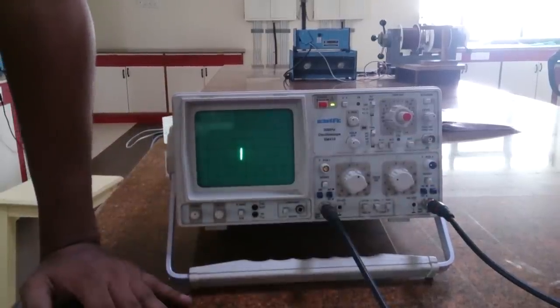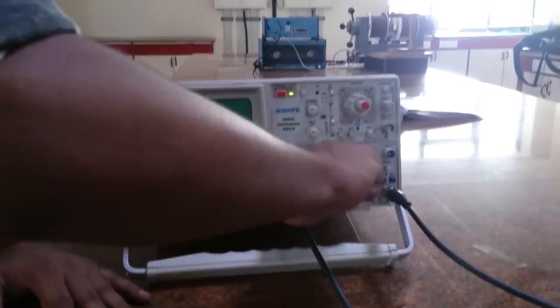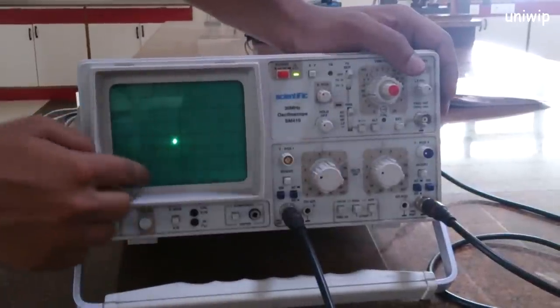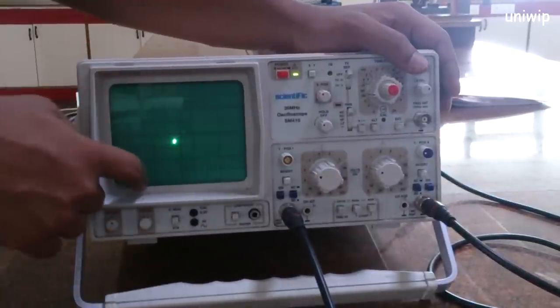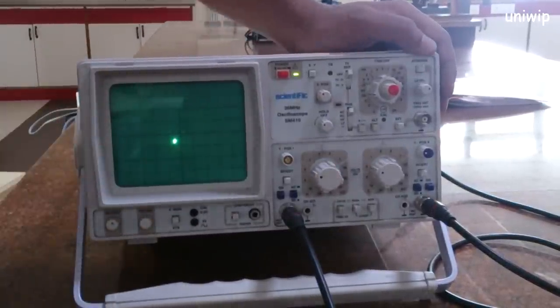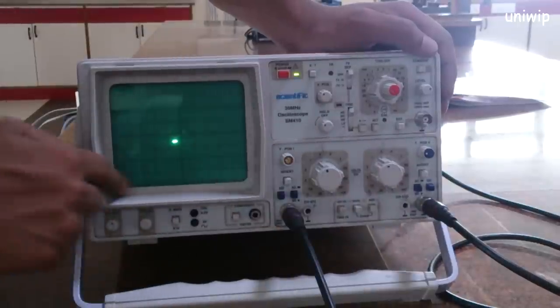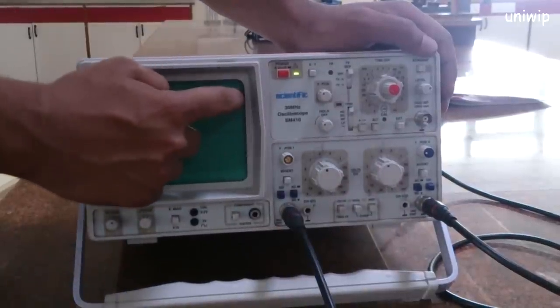So when you do your VH curve experiment, what we did, we tuned this. Let me show you. We tuned this to make sure the VH curve was right inside it. If you check out the video about VH curve, you'll see. We tuned these buttons to show the VH curve nicely fitted inside this.